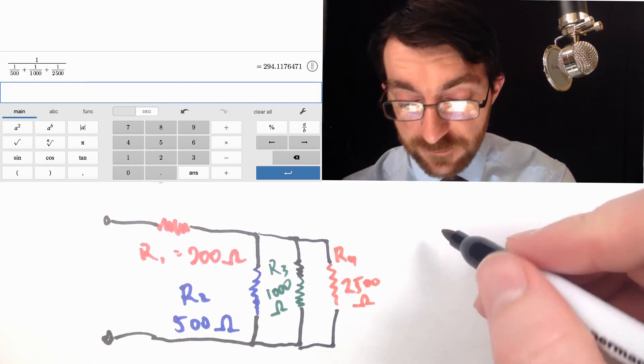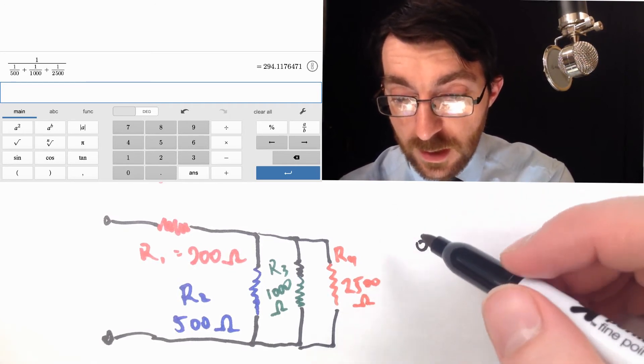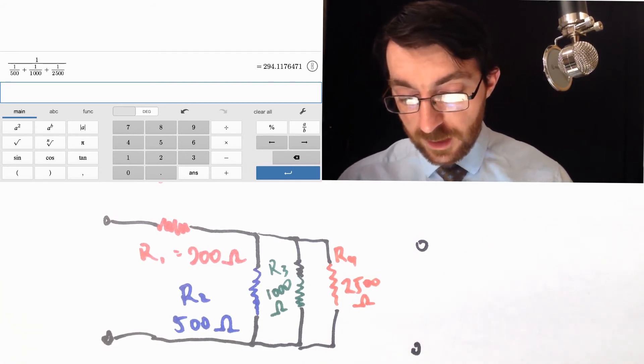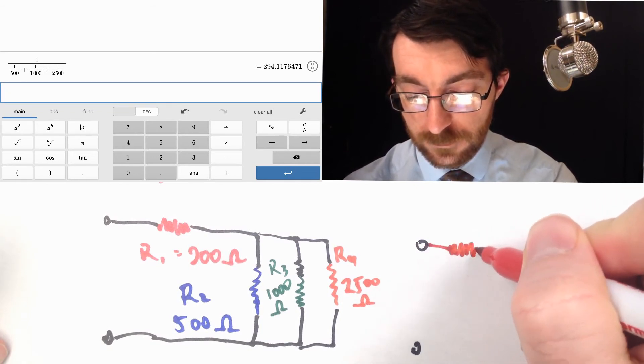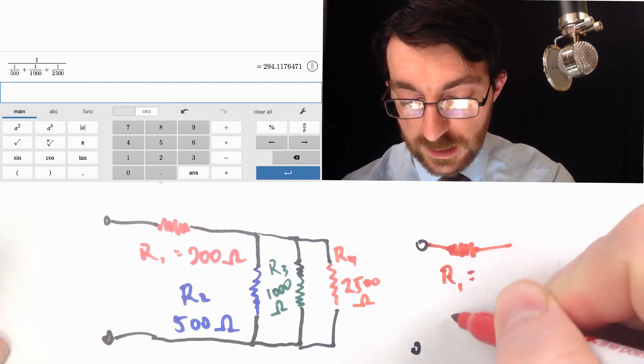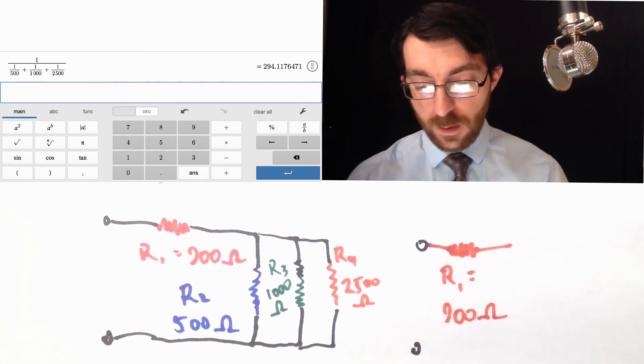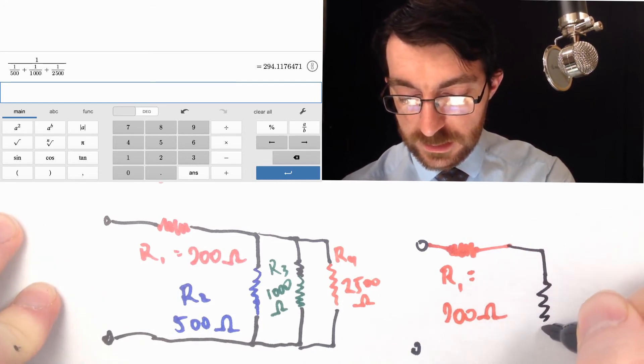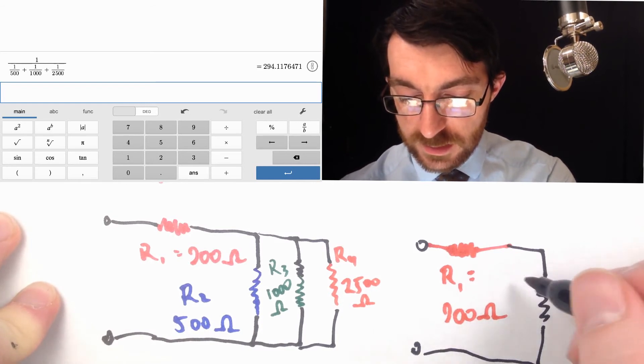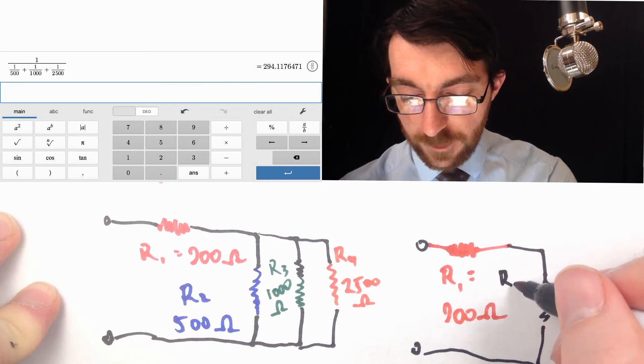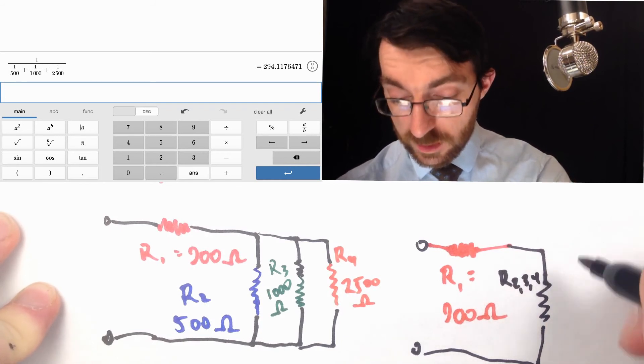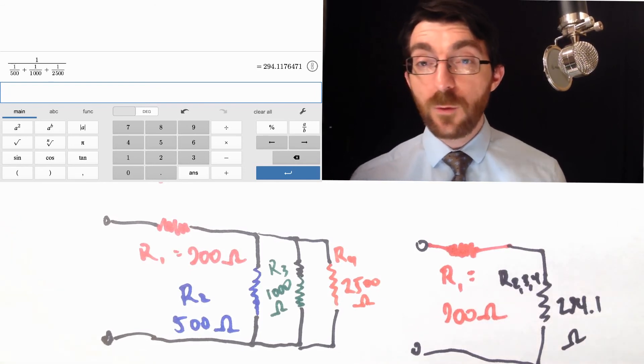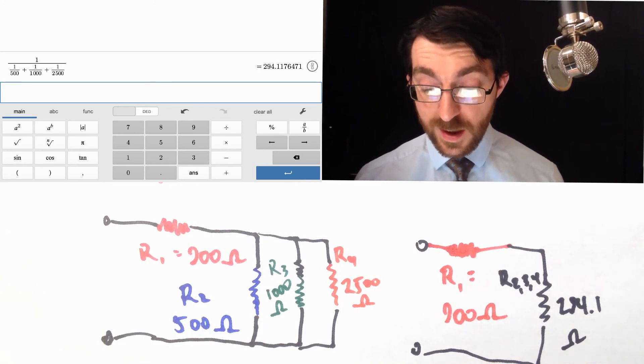Okay, so replacing this then, I can actually fit the second drawing right here. I don't need to use another piece of paper because I'm only going to have two resistors now. I've got resistor 1, and resistor 1 is 900 ohms, and then there is the equivalent resistance of all the other resistors, and so this R2, 3, and 4 is equal to 294.1. So 294.1 is going to be in series with 900.